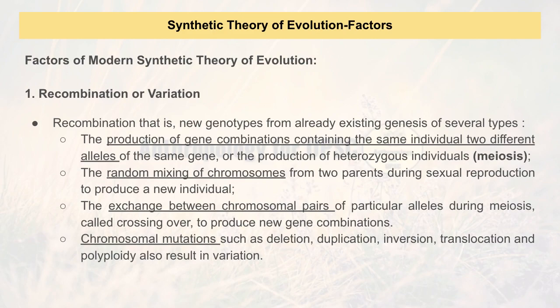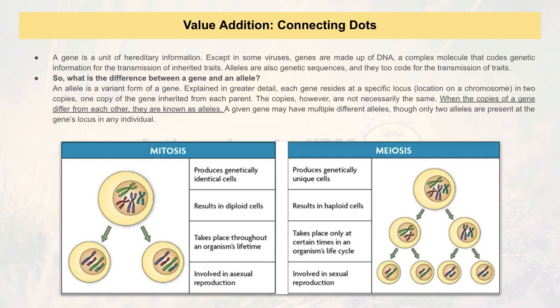Now we'll see the factors of modern synthetic theory of evolution. The very first factor is recombination or variation — basically, random mixing of chromosomes. We all know how we inherit some chromosomes from our father and some from our mother, resulting in various traits and characteristics. To understand this better, it involves a process called meiosis. I've also included a slide on the difference between alleles and genes. Genes are the hereditary information; an allele is when a gene has two copies made that are not identical.